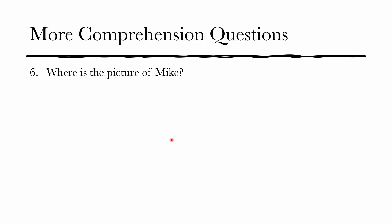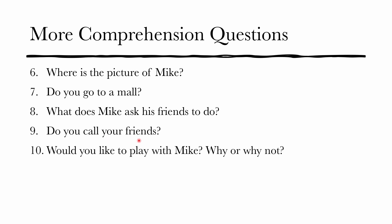Question number six: where is the picture of Mike? Question number seven: do you go to a mall? Question eight: what does Mike ask his friends to do? Question number nine: do you call your friends?